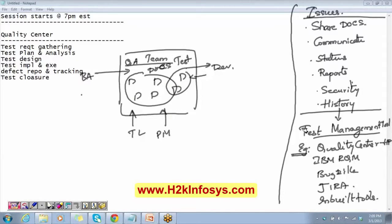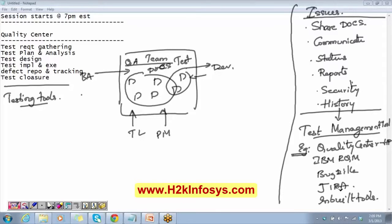These test management tools belong to the category of testing tools. There are many different types of testing tools — like performance testing tools and automation testing tools. Test management is also one category. All the examples I gave belong to this category. Now, when there are so many different types of tools, which one are you going to use? Which one do you select? There are so many of them — which one are you going to learn?